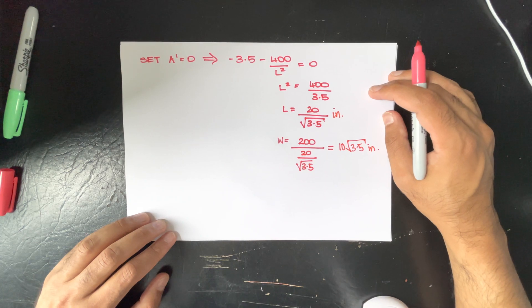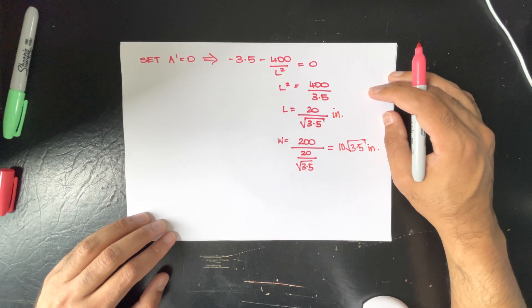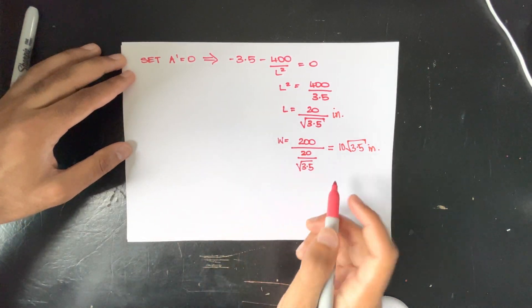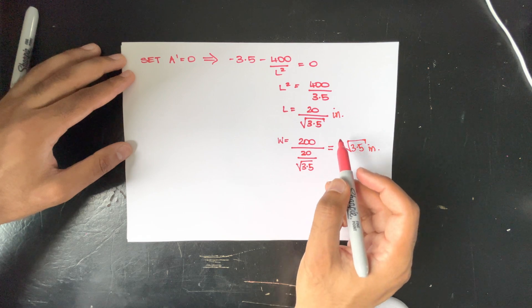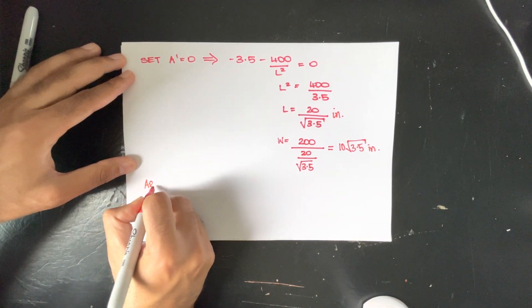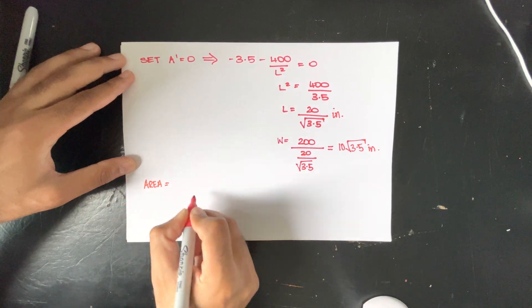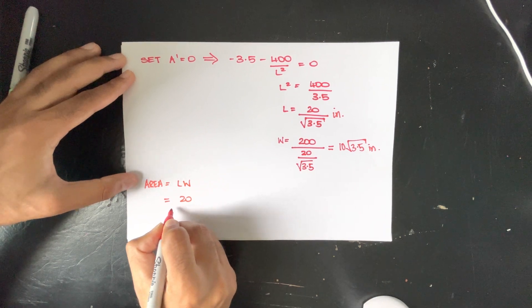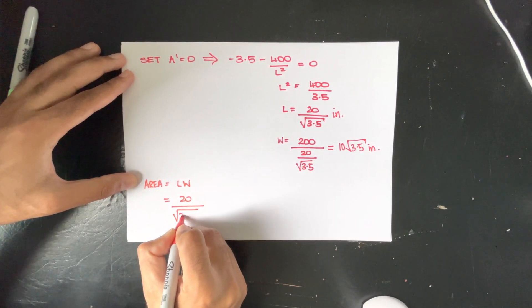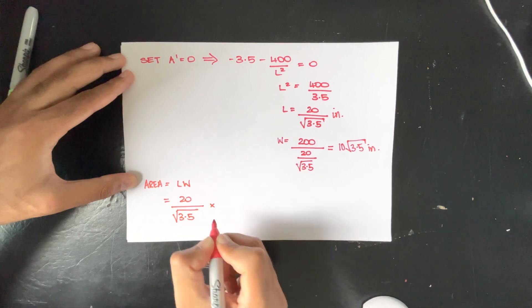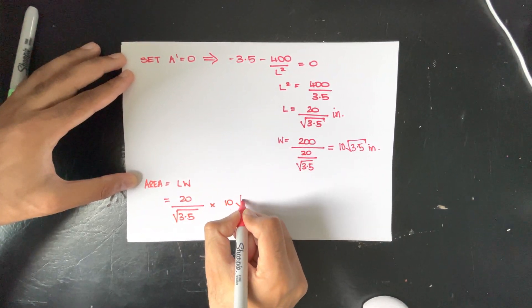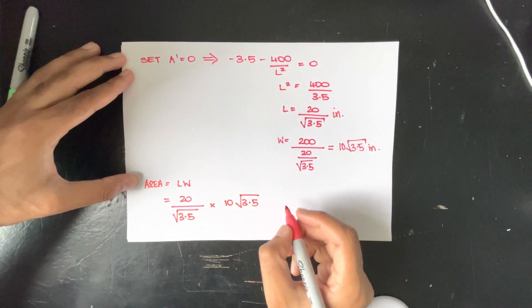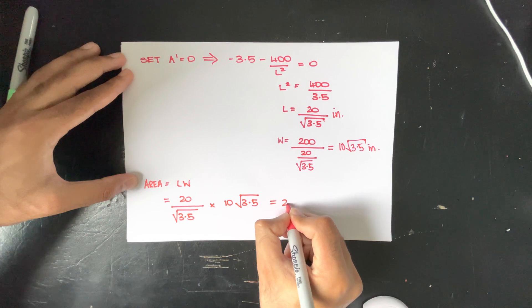And because we're being asked to calculate its area, we will just quickly multiply these terms to check if it is correct. So the area which we know as length multiplied by its width: the length is 20 over square root of 3.5 multiplied by 10 square root of 3.5. The 3.5s will cancel out and we'll be left with 200 inch square.